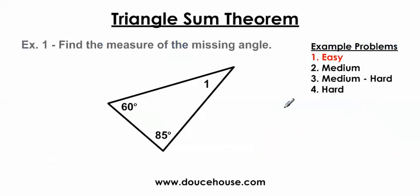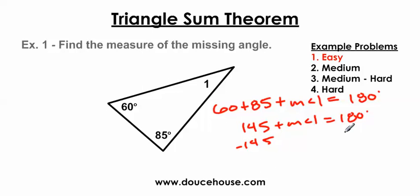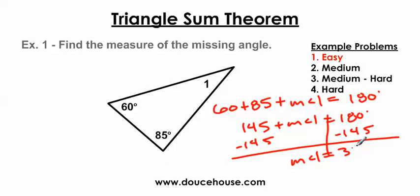I've got a couple of example problems to work on. They start easy and get to fairly complex problems, and they all deal with the Triangle Sum Theorem. This one says find the measure of the missing angle — we're trying to figure out what angle 1 is. My teacher had us add up all the angles: 60 plus 85 plus the measure of angle 1 equals 180 degrees. Combining and solving, the measure of angle 1 equals 180 minus 145, which is 35 degrees.